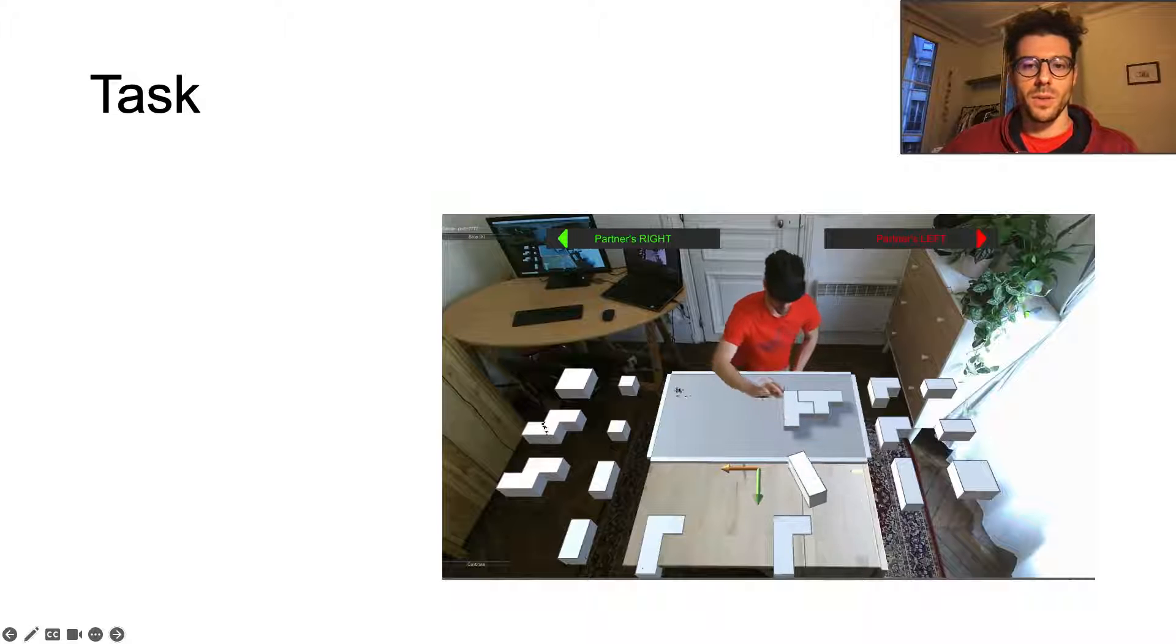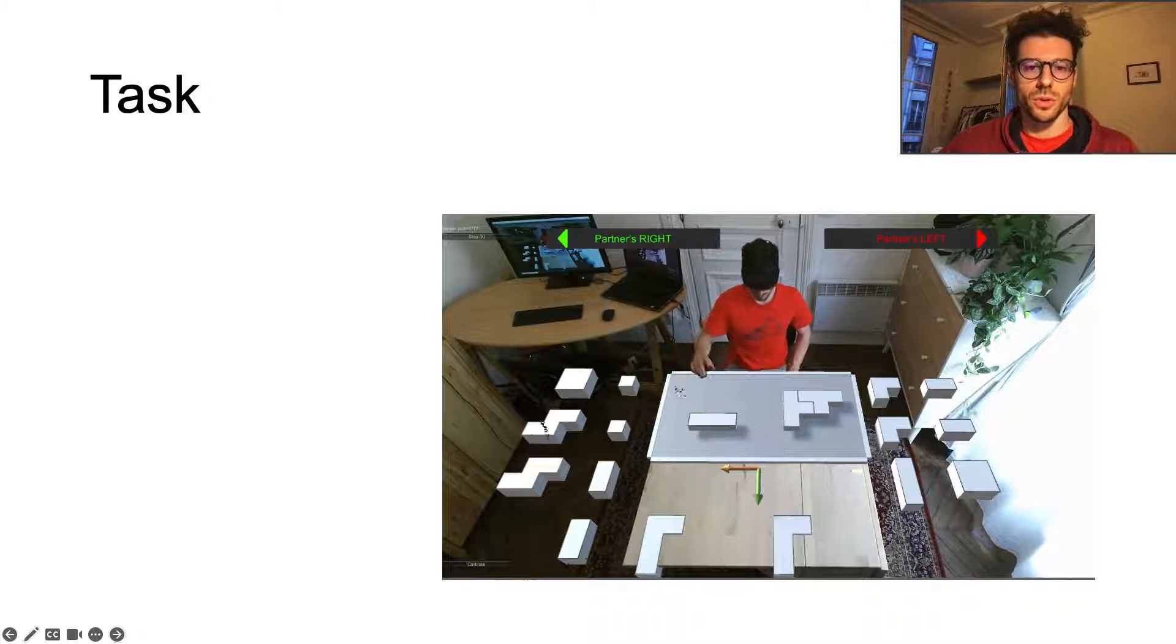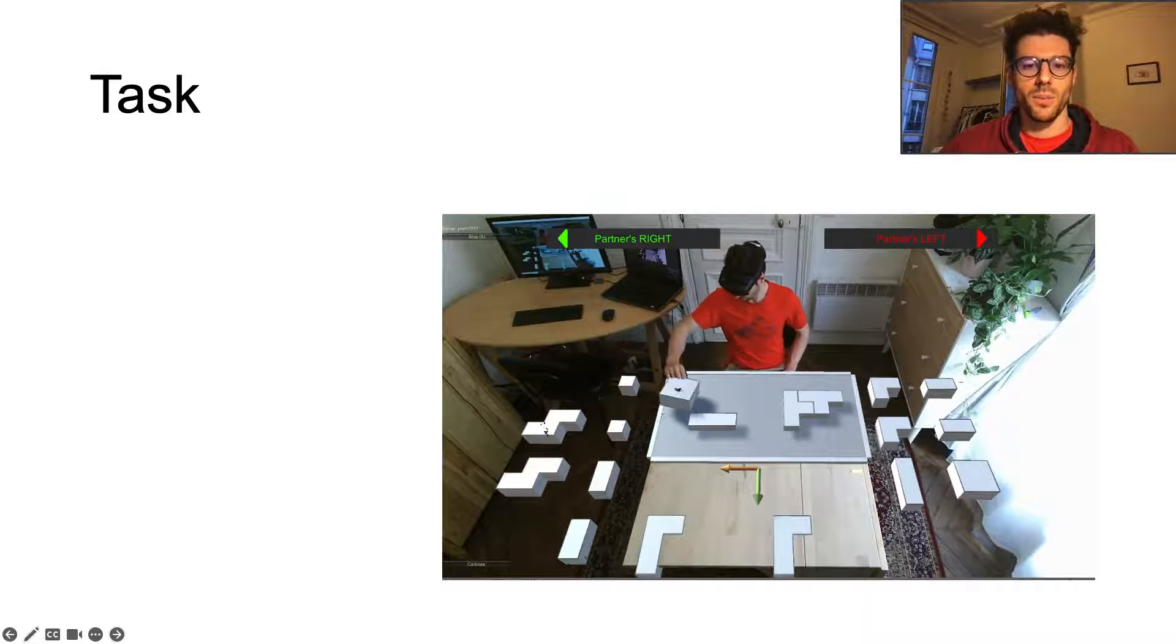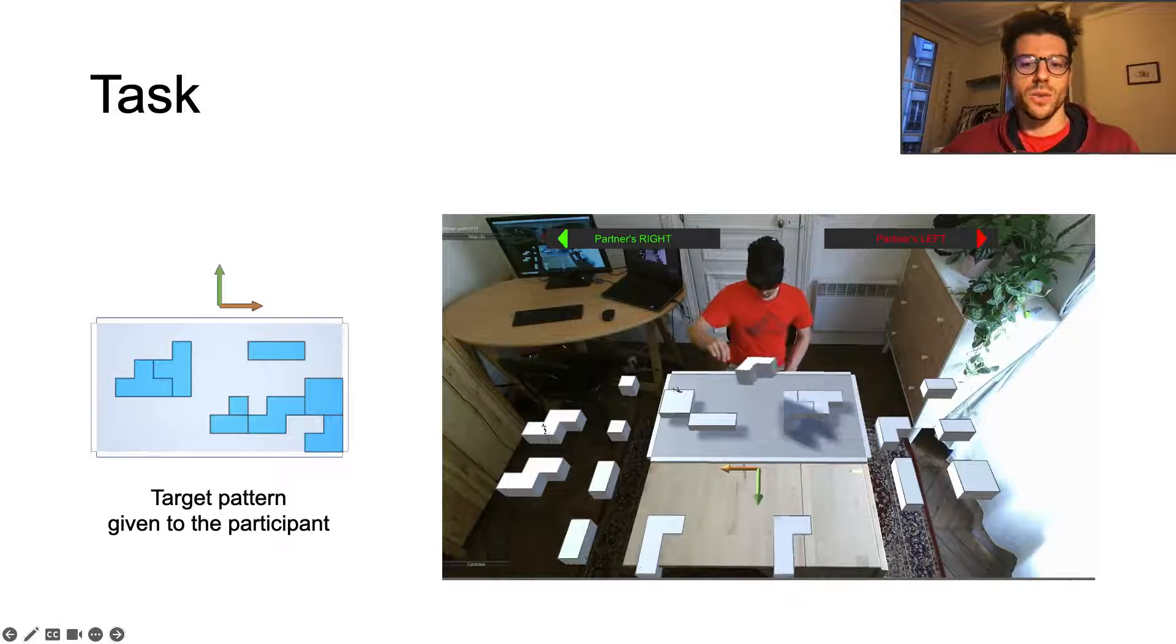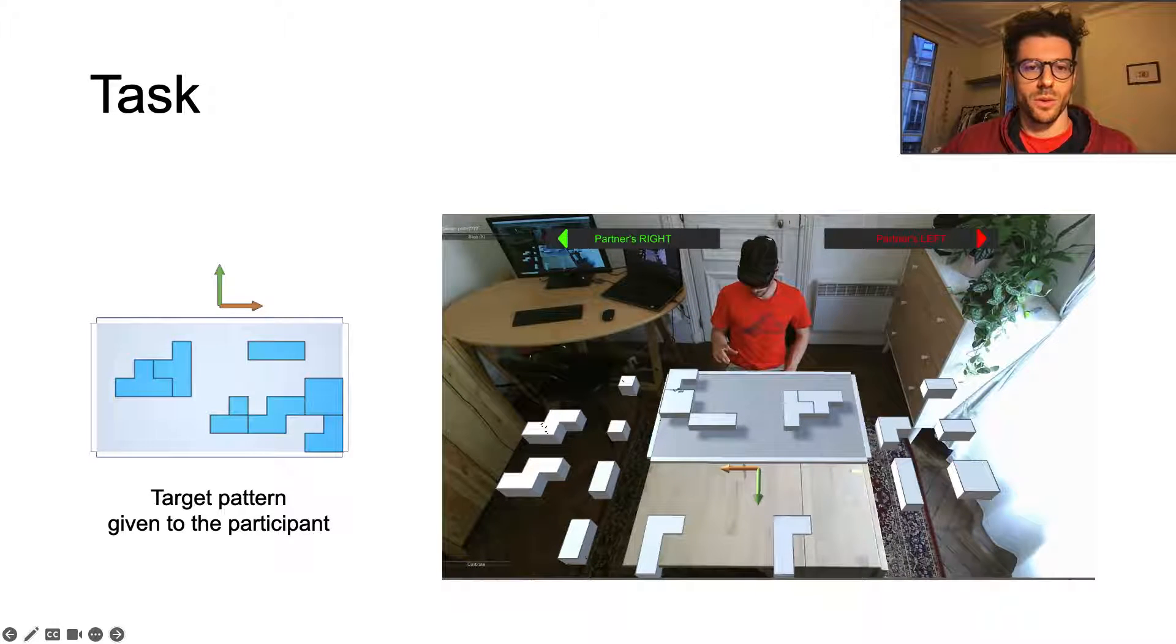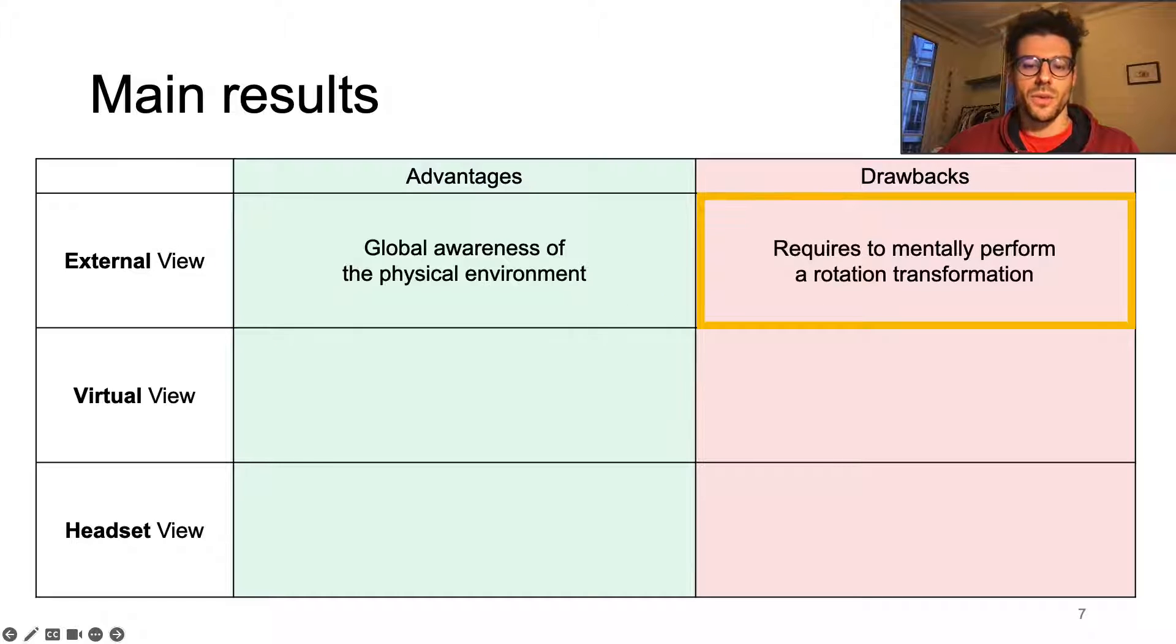Participants were asked to place 30 pieces of different shapes on a virtual board by giving oral instructions to the experimenter who acted as a surrogate. Here, we can see an example of the task perceived by a participant experiencing the external view. The piece's position was given by a 2D top-view pattern randomly generated and unknown to the experimenter. The external view's main advantage appears to be the global awareness provided about the remote physical environment. Yet, the orientation of this view required to mentally perform a rotation transformation.